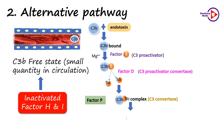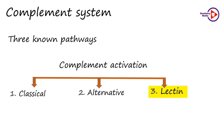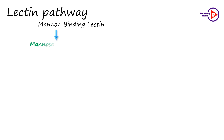The C3 convertase further splits C3 into C3A and C3B, and the remaining action is the same as in the classical pathway. The mannose-binding lectin consists of acute phase proteins produced during inflammatory responses and is involved in the first line defense mechanism. They recognize and bind to specific carbohydrate targets, that is mannose residues, which are present on the pathogen surface. The mannose residues are found in pathogens such as Salmonella, Neisseria, Listeria, Cryptococcus neoformans, Candida albicans, and others.